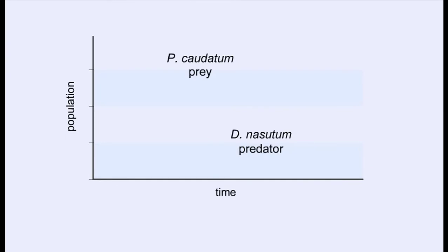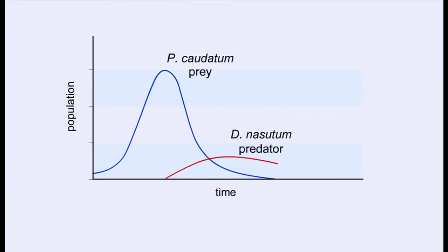This graph shows what happens when a test tube of the predator, D. nasutum, and prey, P. caudatum, are allowed to sit over a few days. Very soon, the predators eat all of the prey, and then predators starve.